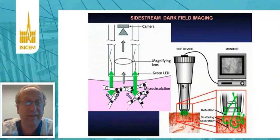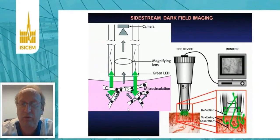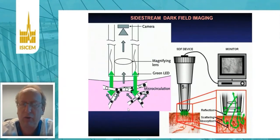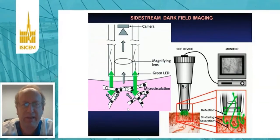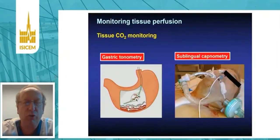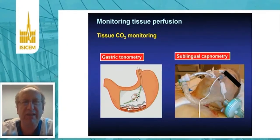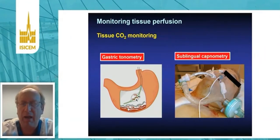All of those studies were performed using sidestream dark field imaging, but we have to confess that this is clearly a research tool. It is very difficult to use this kind of monitoring at the bedside routinely. So let me introduce another tissue perfusion monitoring technique: tissue CO2 monitoring, developed first for gastric tonometry and, a few years later, with sublingual capnometry.